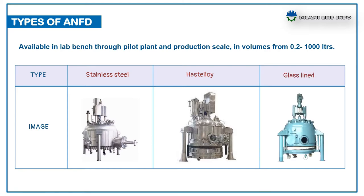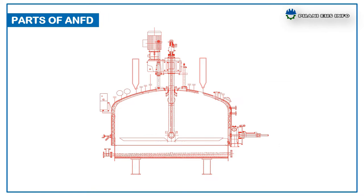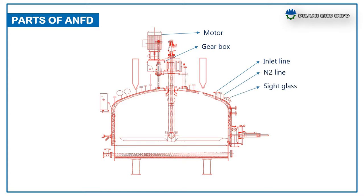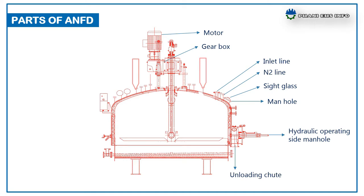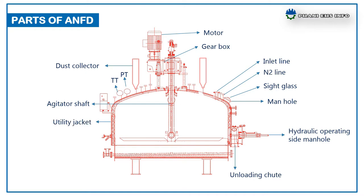ANFD volumes range from 0.2 to 1000 liters. The main parts of an ANFD are: motor, gearbox, inlet line, outlet line, side glass, manhole, hydraulic-operated manhole, unloading chute, dust collector, PT, TT, agitated shaft, utility jacket, filter bed, filter chamber, and filter MS collection port.